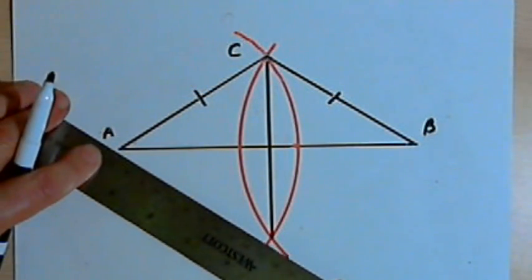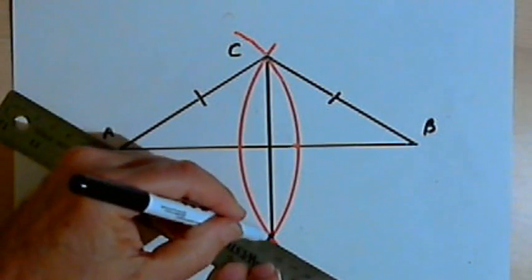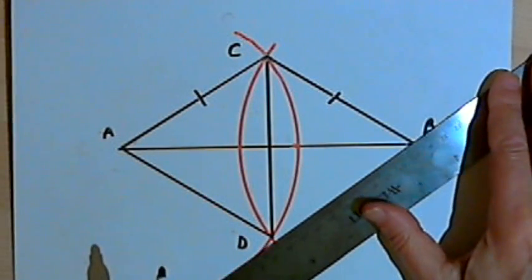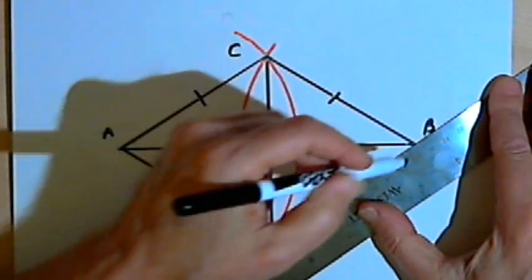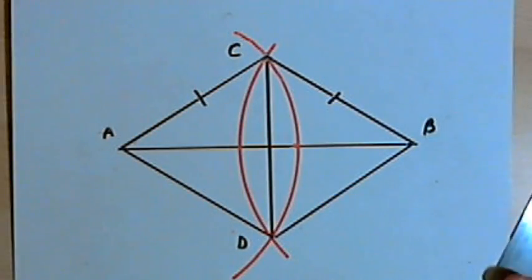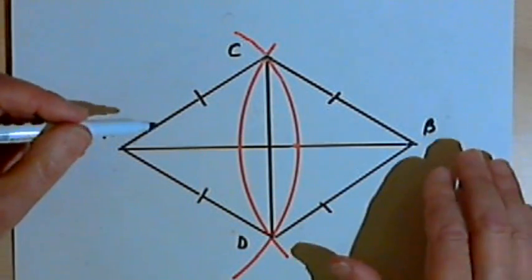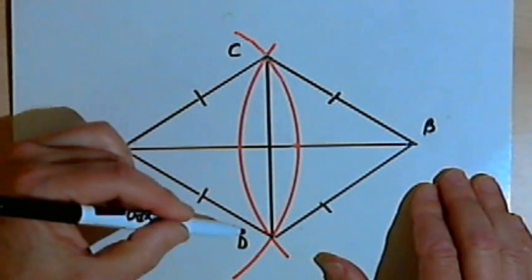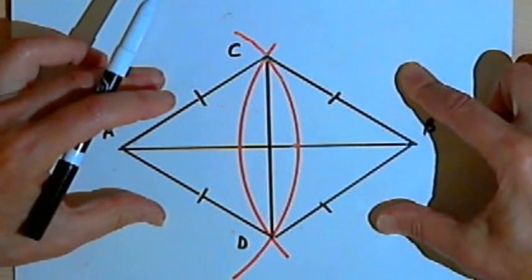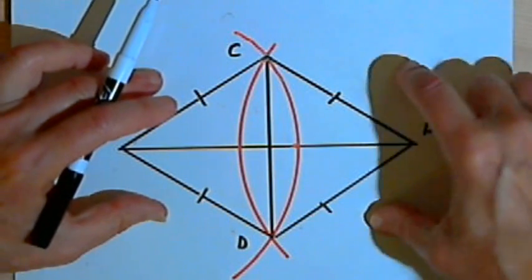The same thing is true for line segments AD and BD—they're congruent also. Now if I look at triangle CAD and triangle CBD, I can show they're congruent because they have three congruent pairs of sides.